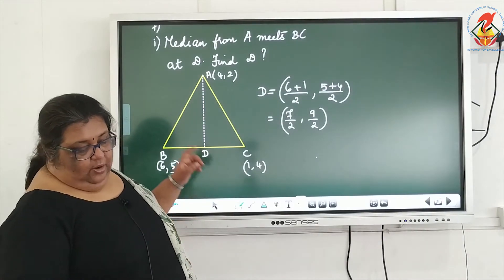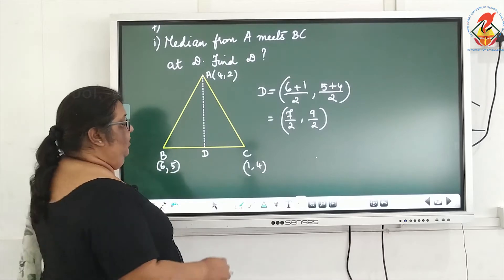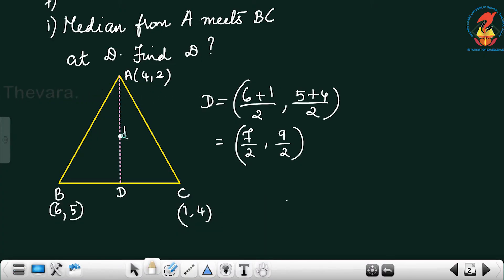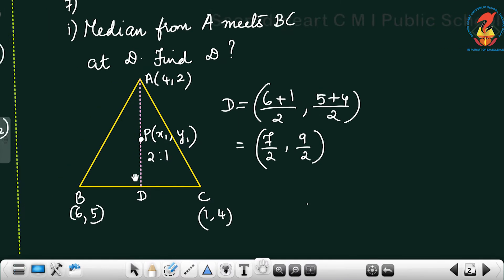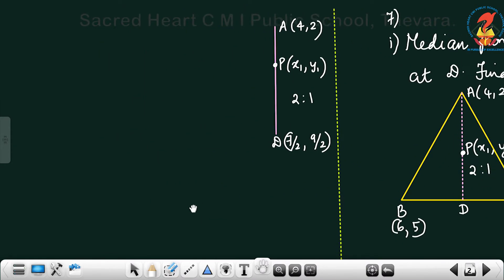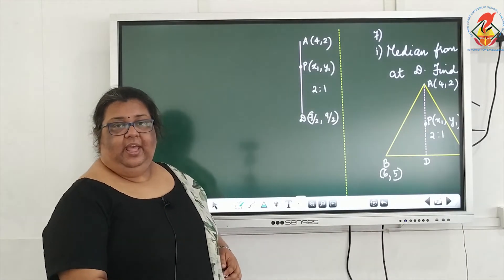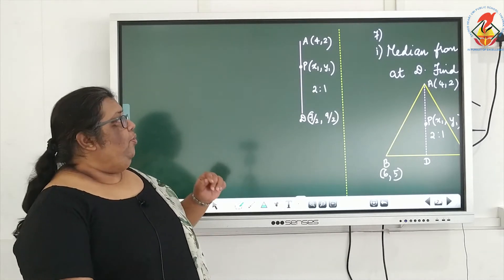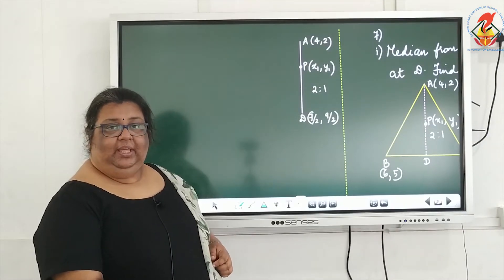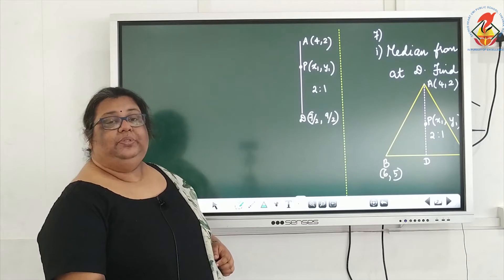Second subdivision: find the coordinate of the point P on AD such that AP to PD is 2 to 1. Now, P is a point on AD, and P divides the line segment AD in the ratio 2 to 1. So M1 to M2 is given as 2 to 1. Two coordinates are given and you have to find point P. Using which formula? Using the section formula.